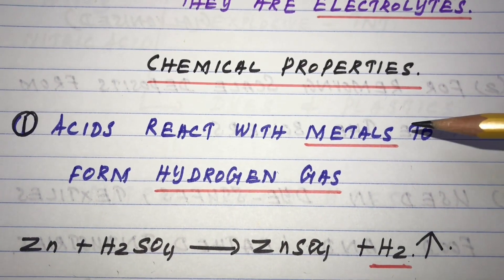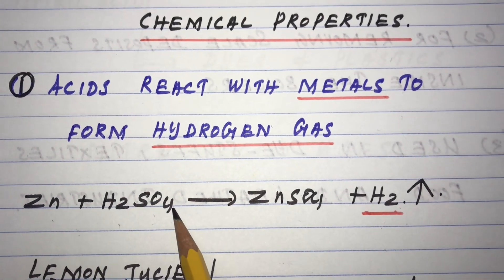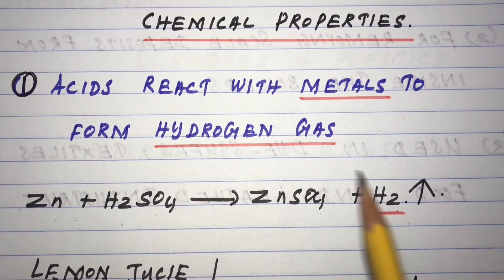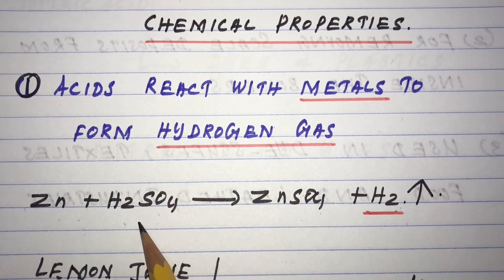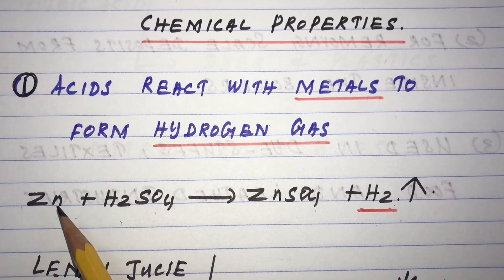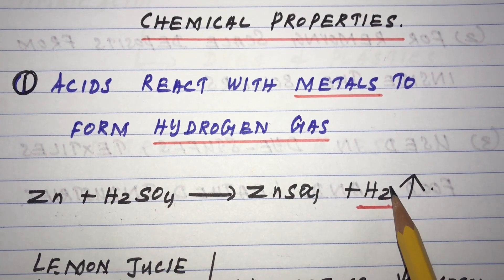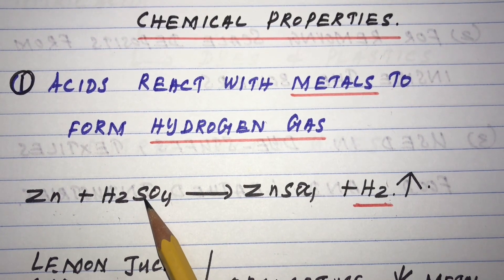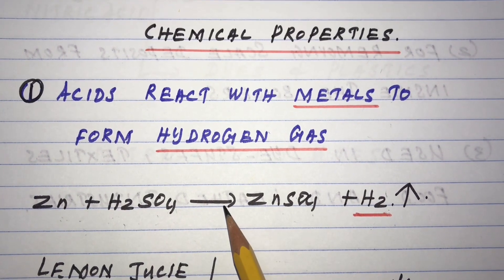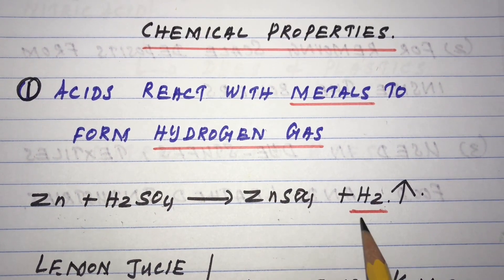Acids react with metals to form hydrogen gas. When acid reacts with any metal, it forms the respective metallic salt and releases hydrogen. For example, sulfuric acid reacts with zinc metal to form zinc sulfate salt and releases hydrogen. If hydrochloric acid reacts with zinc, it forms zinc chloride and releases hydrogen. So generally, acid reacts with any metal forming the respective salt and releasing hydrogen.